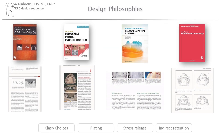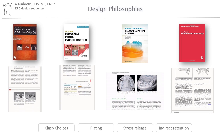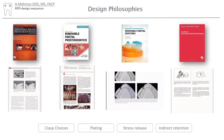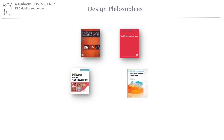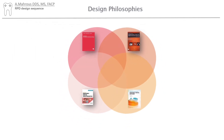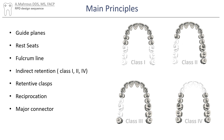It is important to note that there are many design philosophies out there. While they're all valid, they differ in the way they approach class choices, plating of teeth, stress releasing, and indirect retention. The philosophy we will be explaining today is a hybrid of many design philosophies that focuses on evidence, convenience, and simplicity. During this lecture, we will follow seven steps in order to design each of the four main Kennedy classes of RPD.